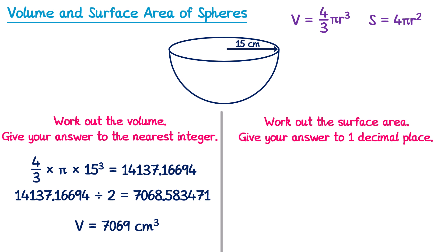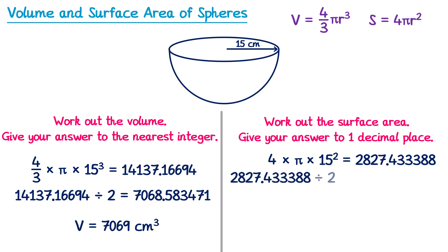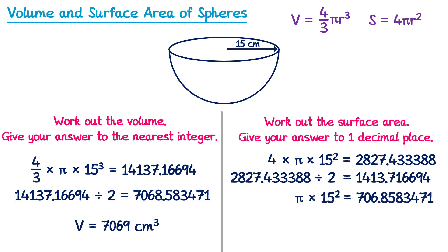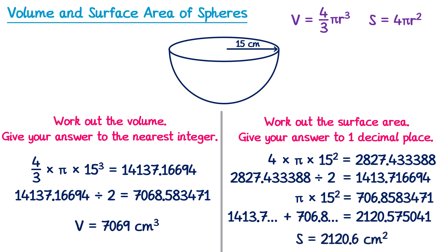For the surface area, start by working out the full sphere's surface area: 4 multiplied by π, multiplied by 15 squared. Divide that by 2 to get the curved part. Then work out the circular face area: π times 15 squared. Add these two together — 1413.7... plus 706.8... — and rounded to one decimal place, the total surface area is 2120.6 centimeters squared.